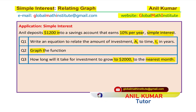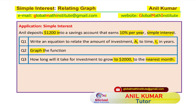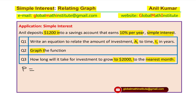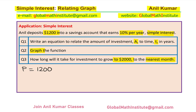In case you want to learn from me, feel free to send an email on the address given. Now let us try to understand the concept. Anil deposits $1200 into a savings account. So the money deposited is called the principal amount, P. I am writing this as $1200. Okay.